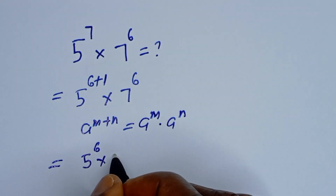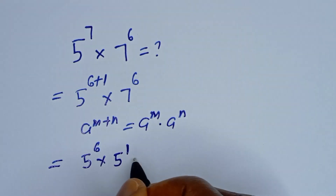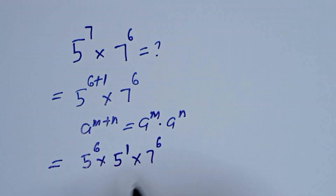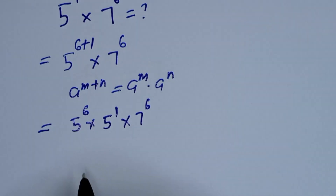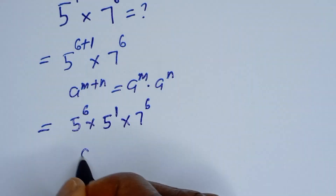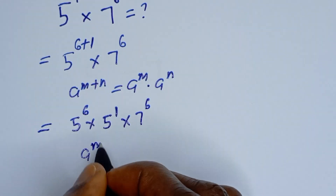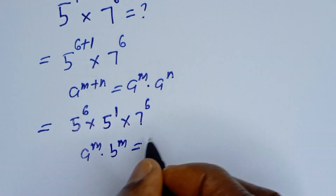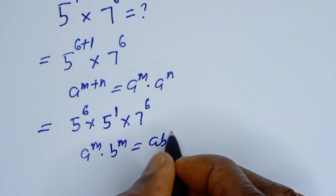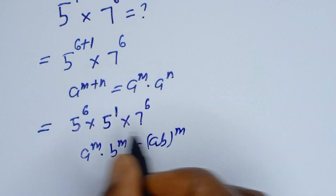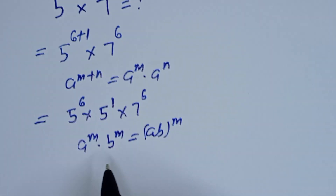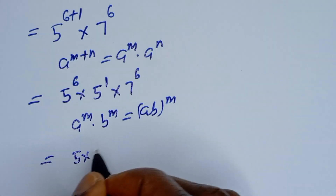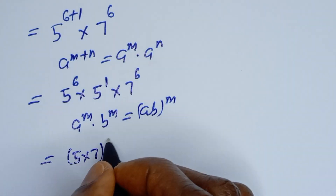Then, if you have a to the power of m multiplied by b to the power of m, this is equal to a times b, to the power of m. Here we have five to the power of six and seven to the power of six — both raised to the power of six.